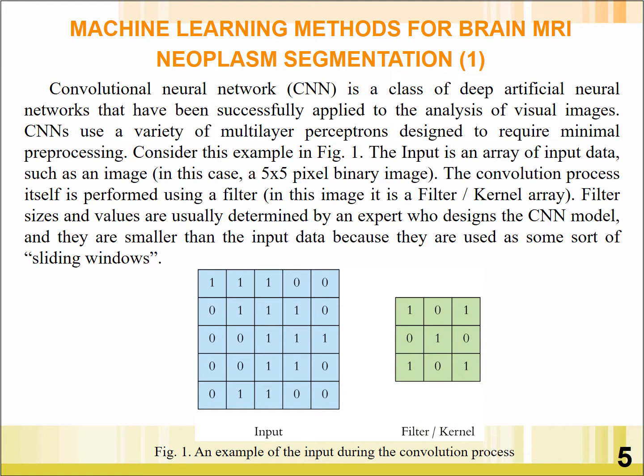Let's consider convolutional neural networks as a class of deep artificial neural networks that have been successfully applied to the analysis of visual images. CNNs use a variety of multilayer perceptrons designed to require minimal pre-processing.